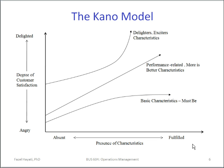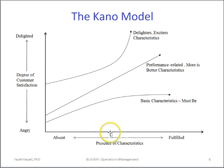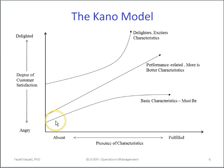To emphasize this, we can review the Kano model for customer satisfaction. Dr. Kano describes three features of the levels of customer satisfaction. If we look at the horizontal axis as some quality characteristic and the vertical axis as the level of customer satisfaction, we can divide customer satisfaction and quality into three parts.